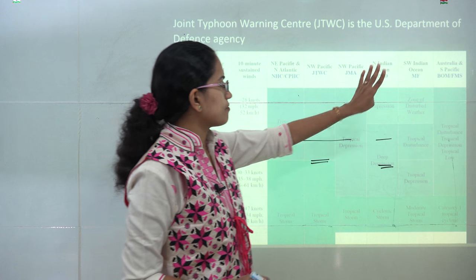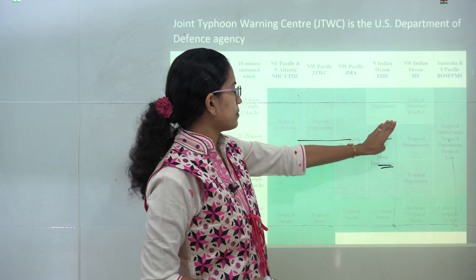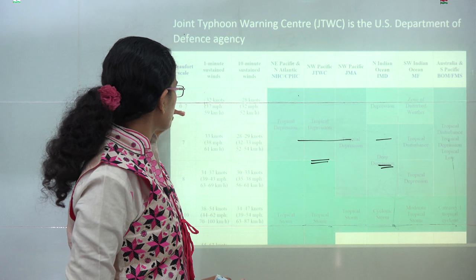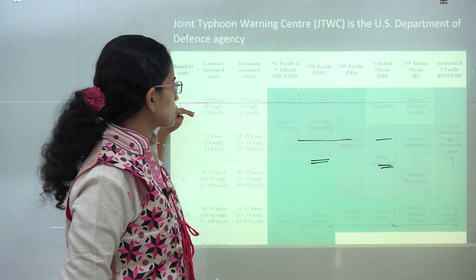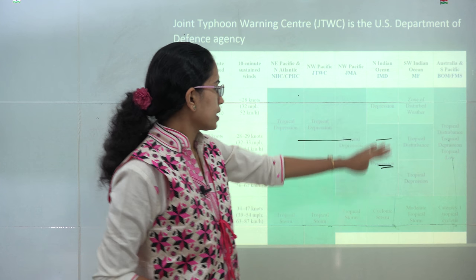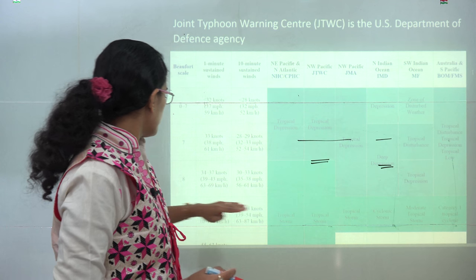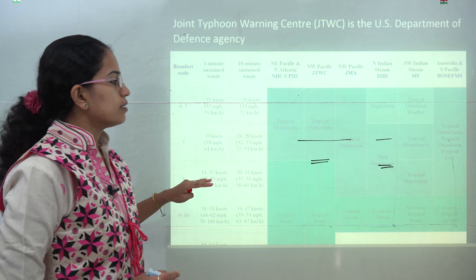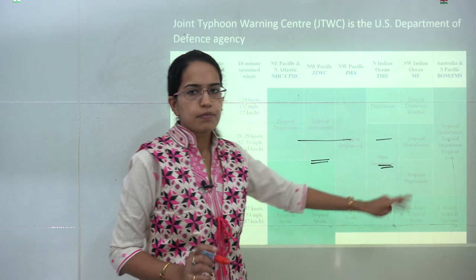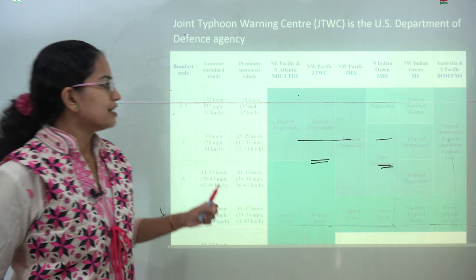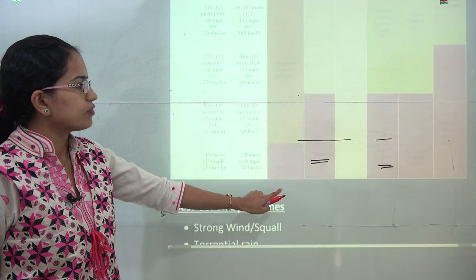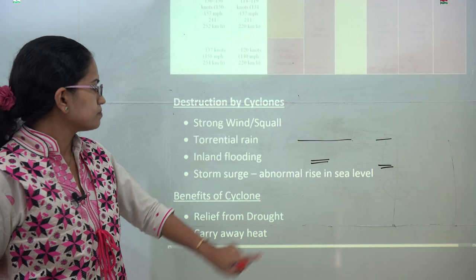The speed classifications differ under the Beaufort scale across different agencies. Under the IMD classification, up to a Beaufort scale of 0 to 7 is called a depression, up to 8 is a deep depression, and so on. This classification table is very important to remember.